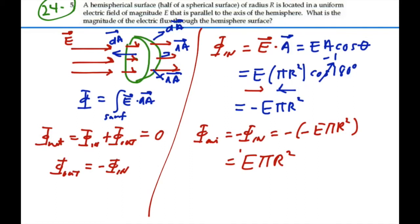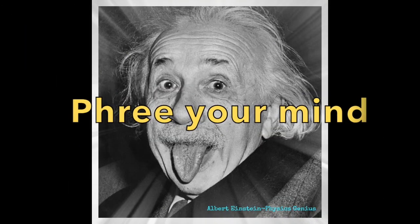It's positive, which we should expect for a flux that's exiting the surface. It should be a positive flux. And so we have E times pi R squared is the flux that is exiting the hemispherical surface on the right. Thank you.